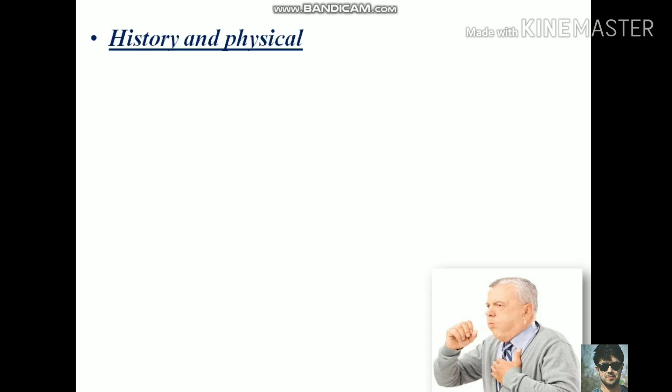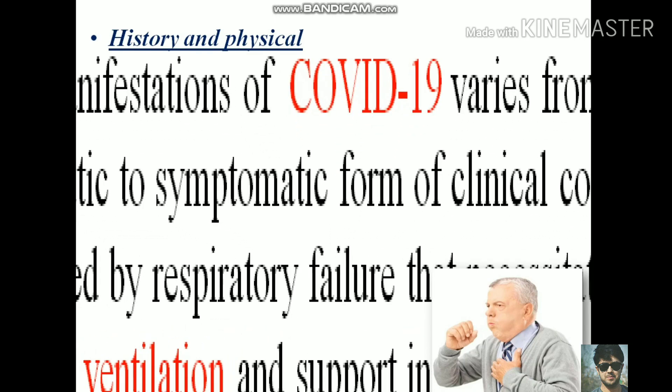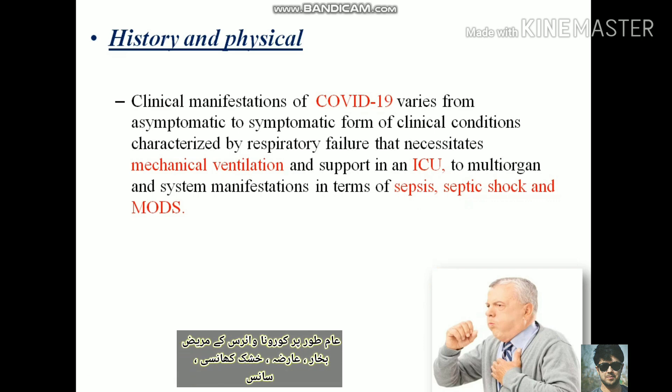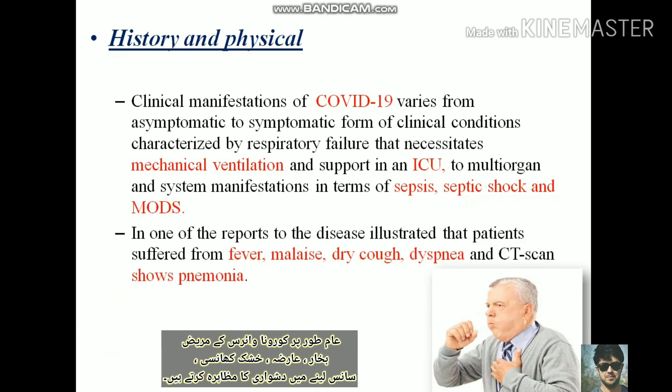The signs and symptoms of COVID-19 vary depending on severity. The clinical symptoms range from asymptomatic to symptomatic forms, characterized by respiratory failure necessitating mechanical ventilation and ICU support, up to multiple organ failure in terms of sepsis, septic shock, and multiple organ dysfunction syndrome. One of the first reports of the disease illustrated that patients suffer from fever, malaise, dry cough, and dyspnea, with CT scan showing pneumonia.